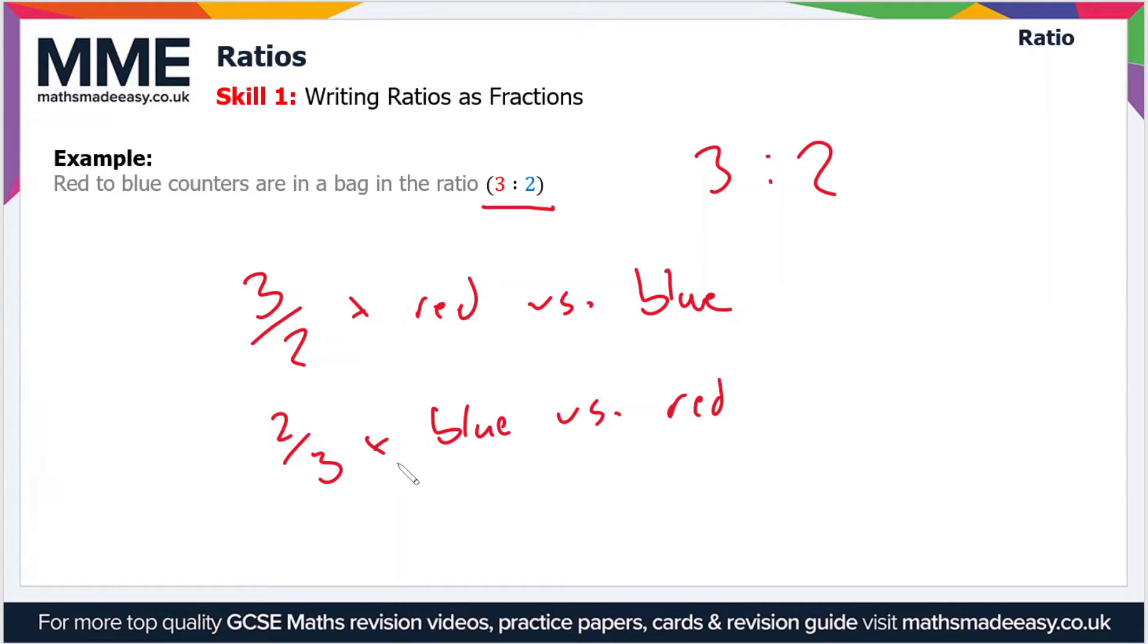But we can also write these parts as a fraction of the total number of parts. If our parts are three and two, the total number is five. For red counters, we can say that there are 3/5 of the counters which are red.